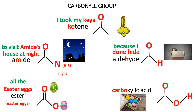Lastly, carboxylic acid — the H, the O, and the H attached to this carbon-oxygen double bond looks a lot like an egg hiding inside a cardboard box. The H represents the box and the O is the Easter egg hiding in the box. And 'cardboard' sounds like 'carbo-xylic.' So if you put the whole story together it goes: 'I took my keys to amide's house at night because I-dun-hide all the Easter eggs in a cardboard box.' Ketone, amide, aldehyde, ester, and carboxylic acid.